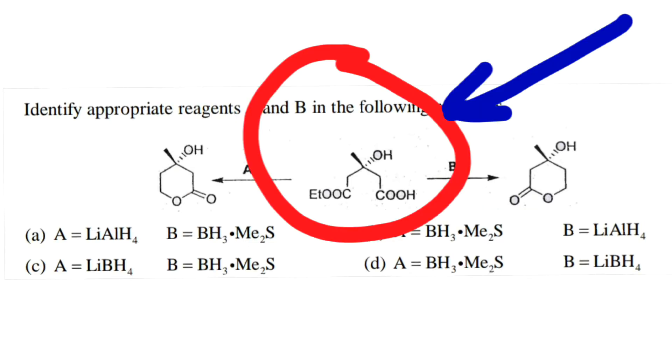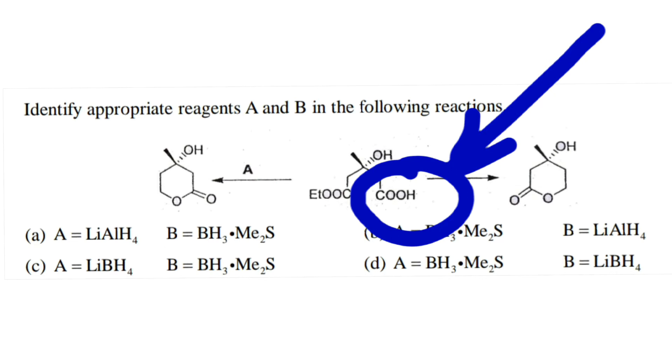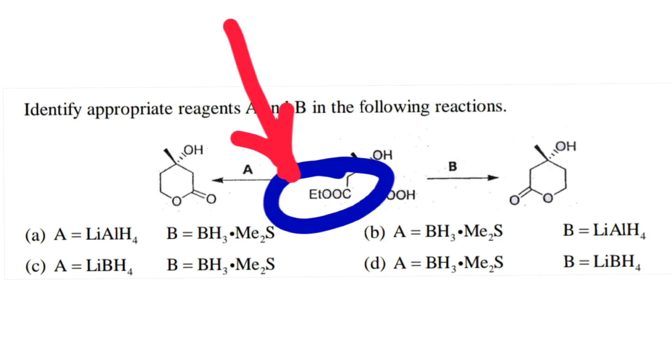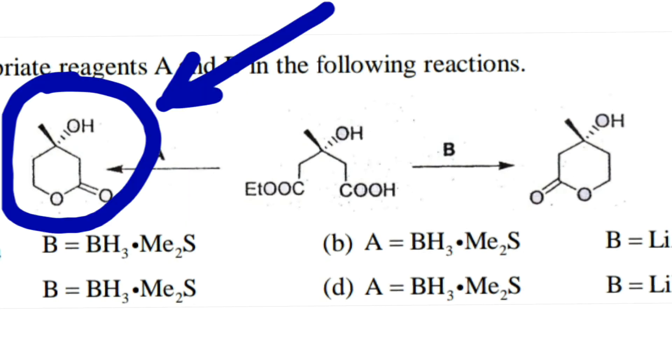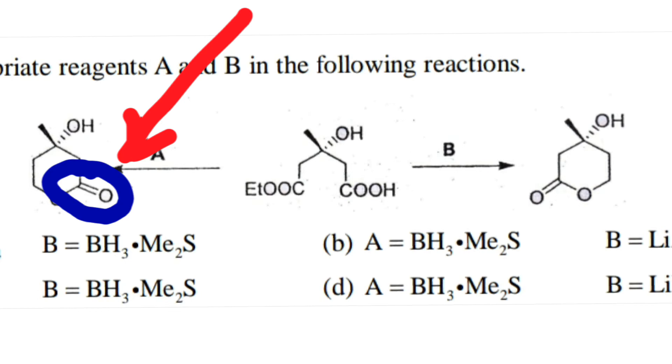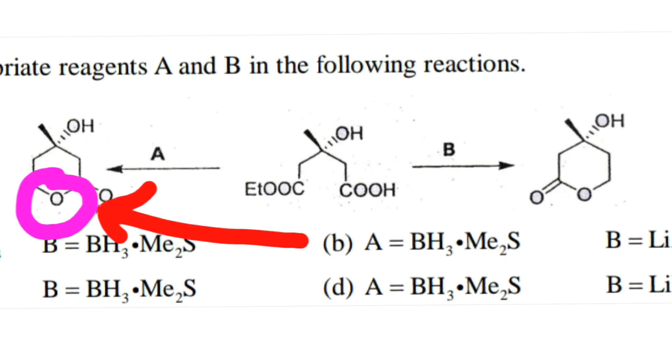When you look at this reactant, there is a carboxylic acid group here and there is an ester group here. In case of A, the product over here has the carbonyl group here and the oxygen is here.